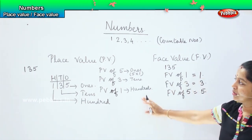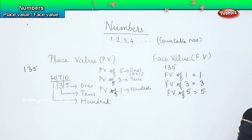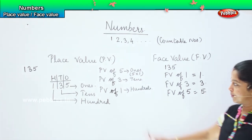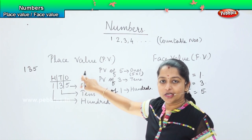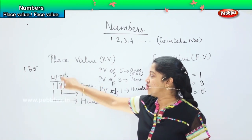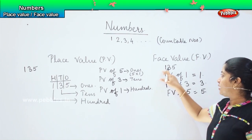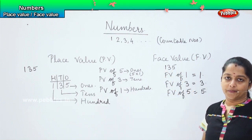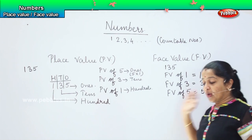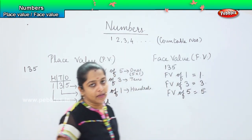So, are you able to note the difference between the face value and the place value, children? Place value talks about the position of that particular number, that is in which units it is placed, whereas the face value tells what is the value of that number. It does not count the place value of that particular number.